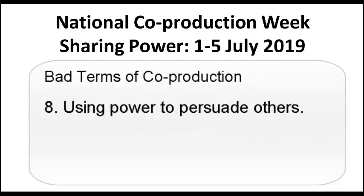Number eight is using power to persuade others. This is something that has existed in society for a very long time. Michel Foucault wrote and talked extensively about the uses of power in organisations and society — how it can control others. This is a situation that undermines co-production results; it's about power and control in order to keep systems running to serve the few.